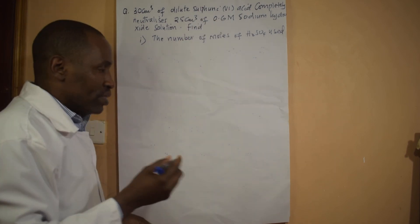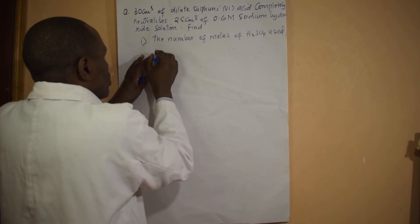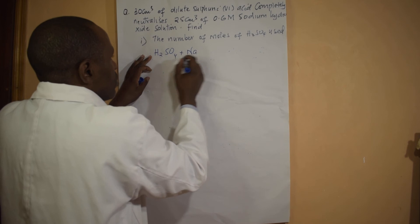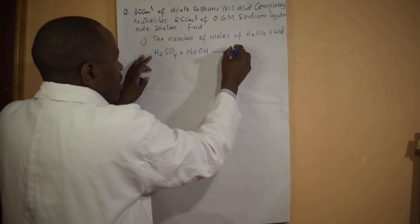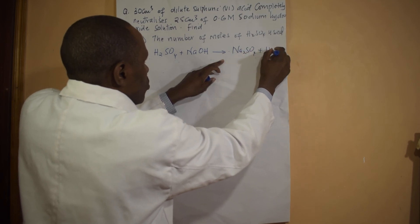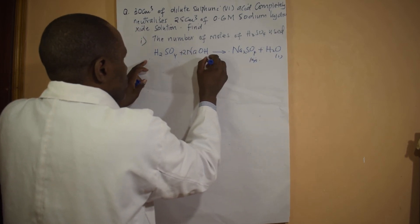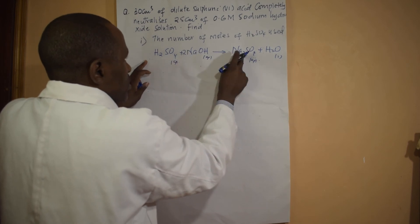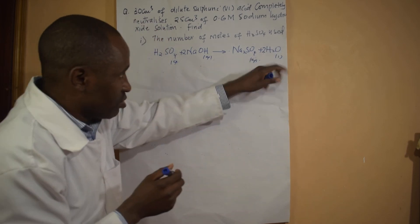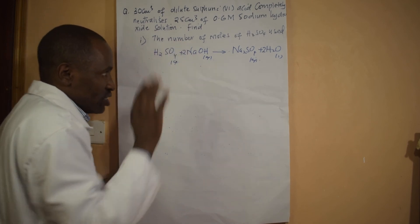So let's first write the equation: sulfuric acid plus sodium hydroxide gives sodium sulfate plus water. As we have just seen, I need to put a two in front of sodium hydroxide, giving two sodiums on each side. The number of hydrogens balances out with four on each side if I put a two in front of water. So the reacting mole ratio is 1:2 — one mole of sulfuric acid to two moles of sodium hydroxide.